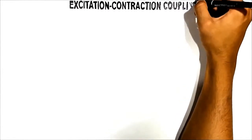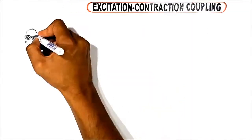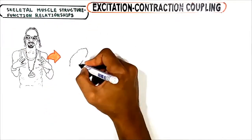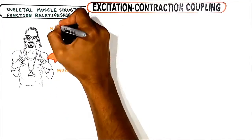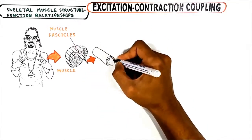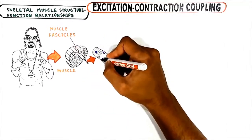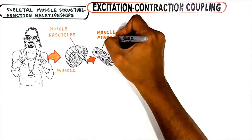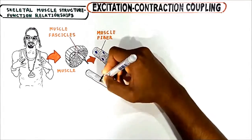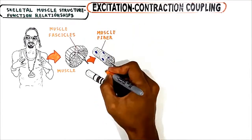In this video we will talk about skeletal muscle structure and cross-bridge cycling during contraction. Skeletal muscle is composed of fascicles that are in turn comprised of multi-nucleated muscle fibers. These fibers are exactly what are called muscle cells, and these muscle cells are composed of smaller myofibrils.